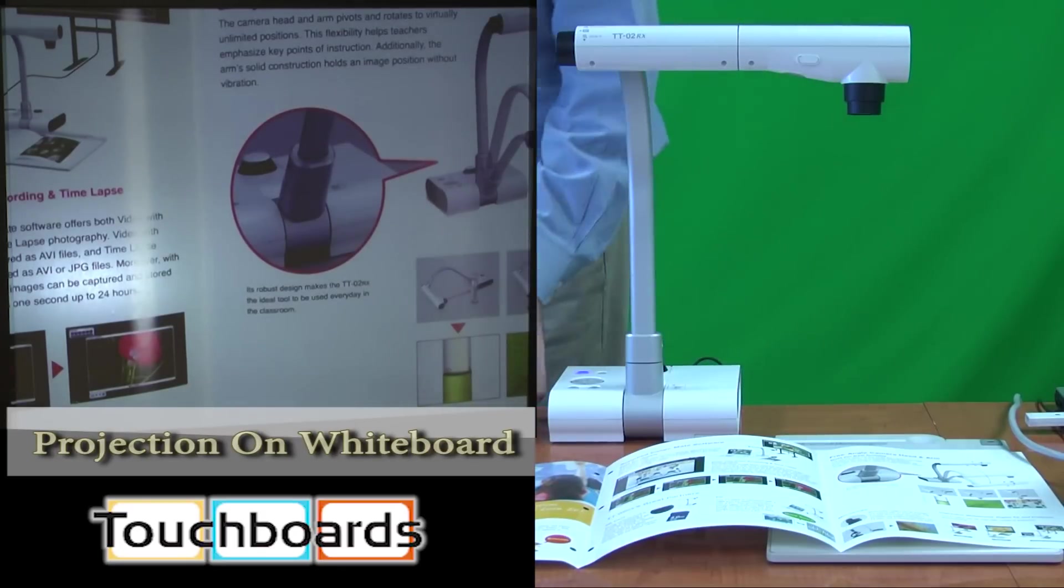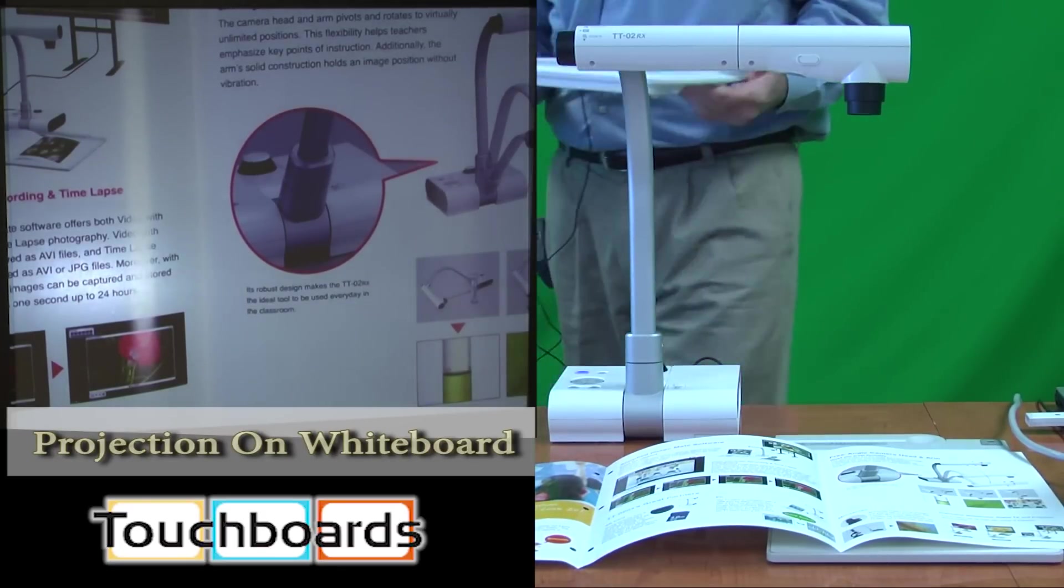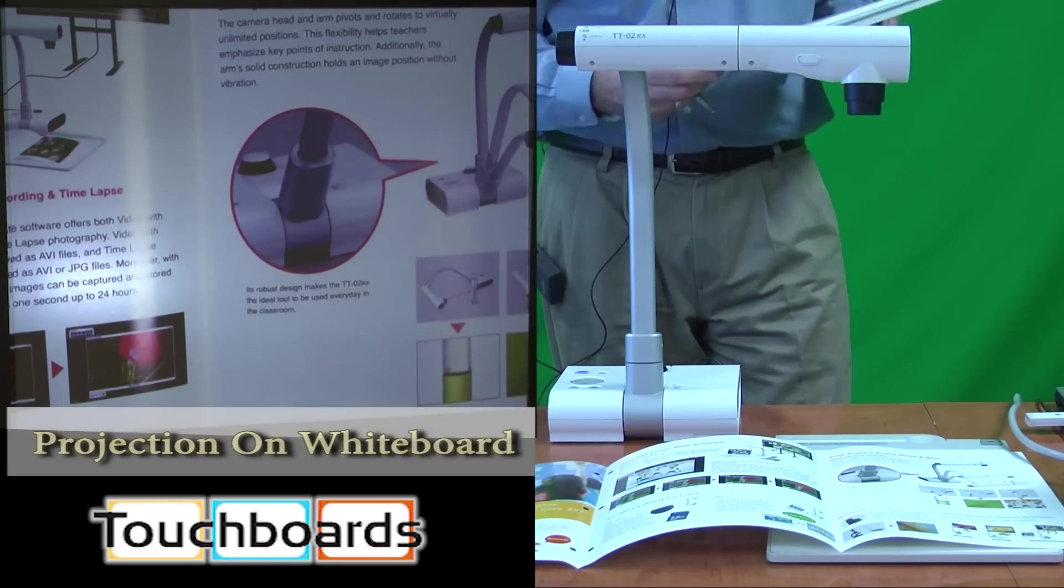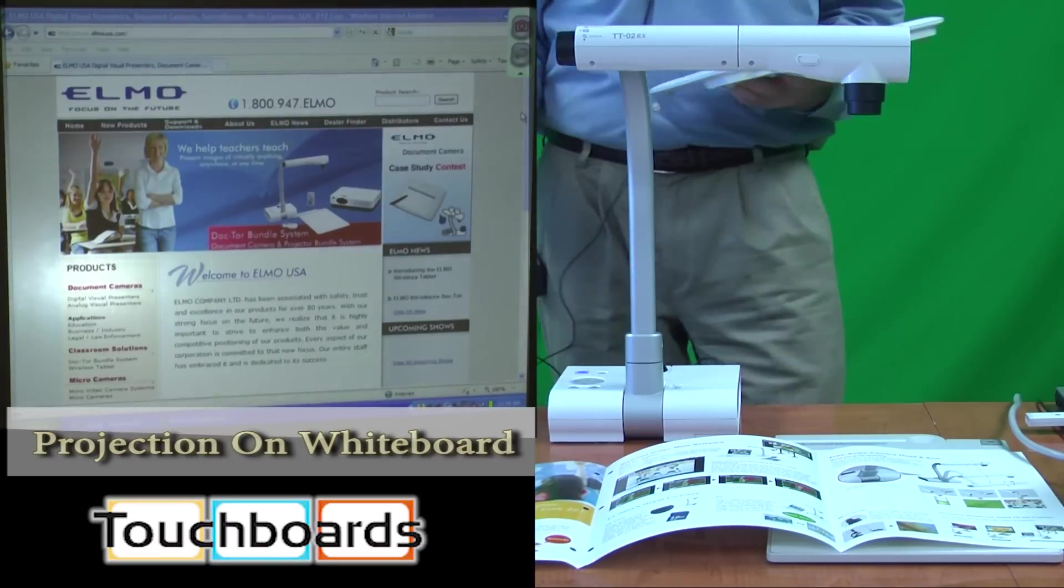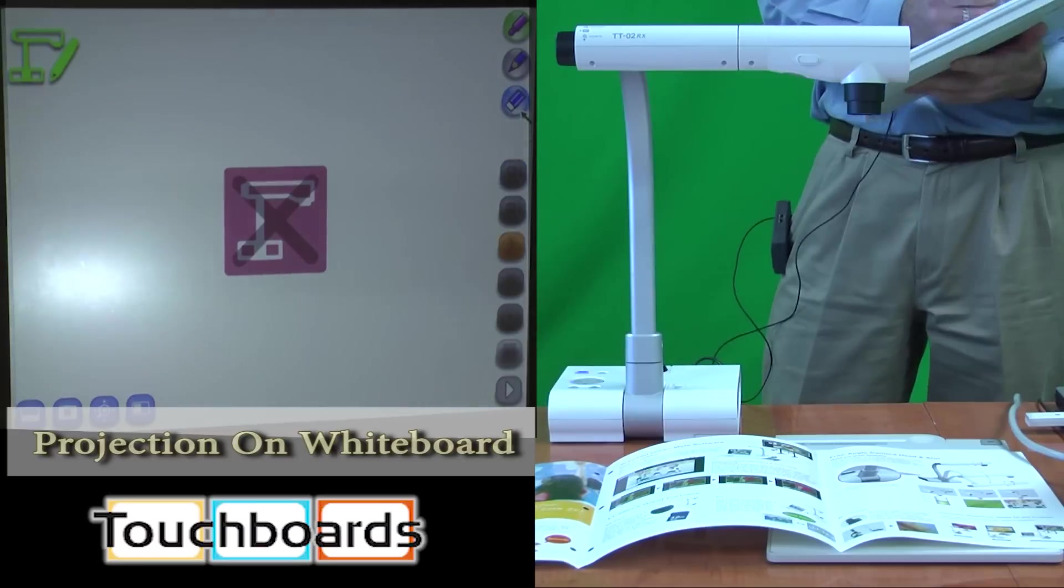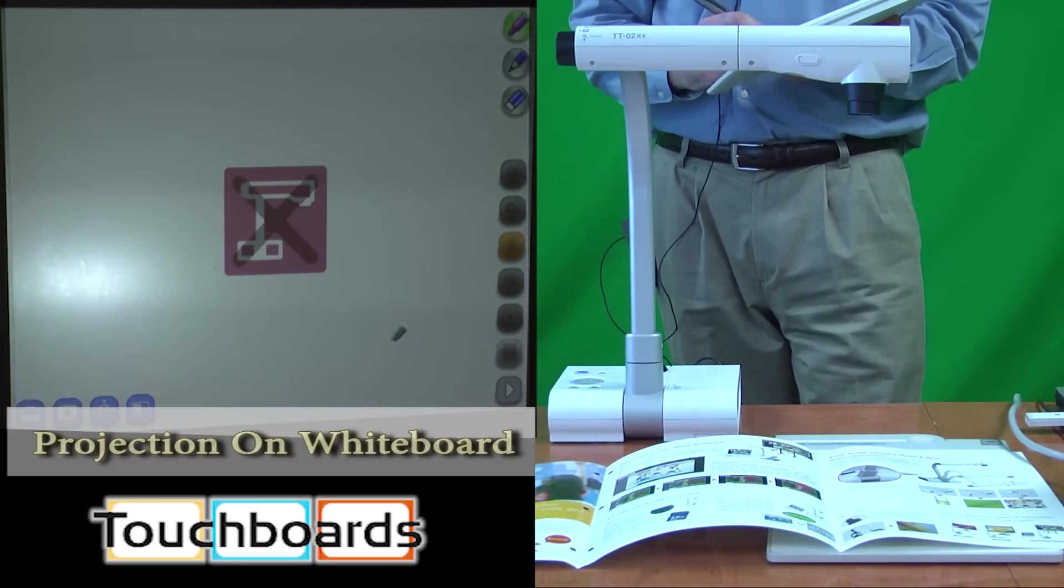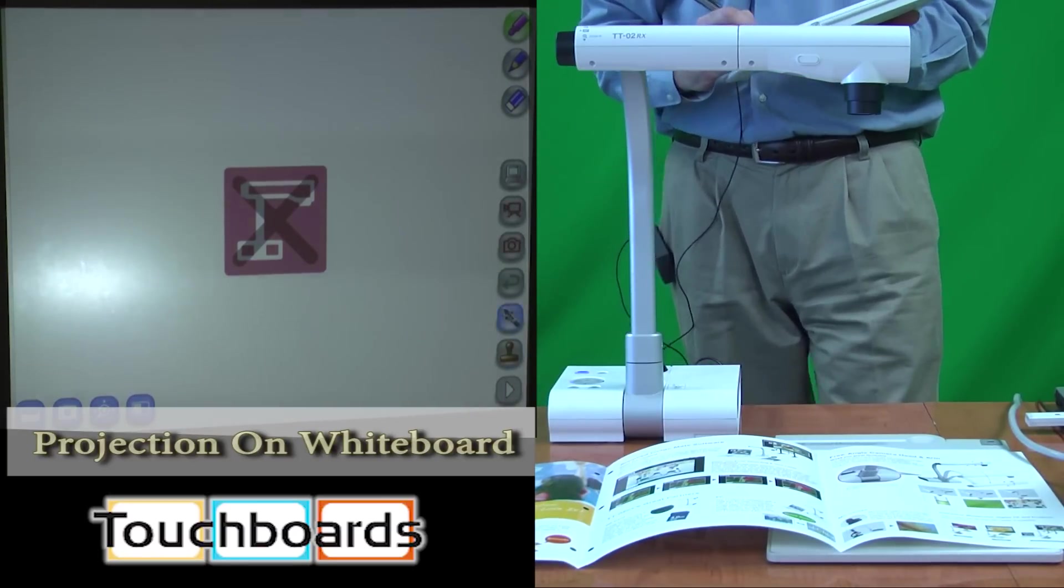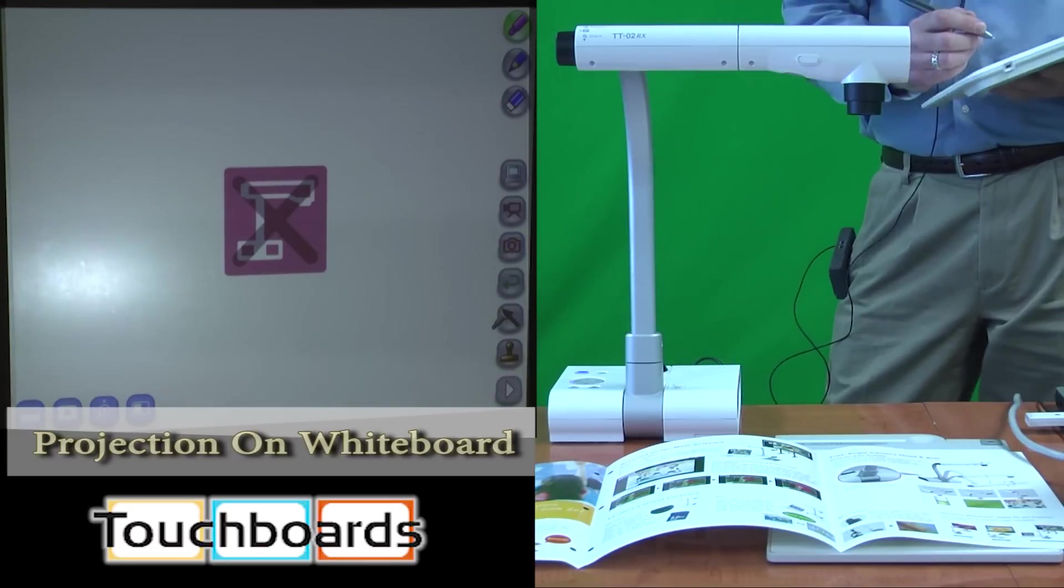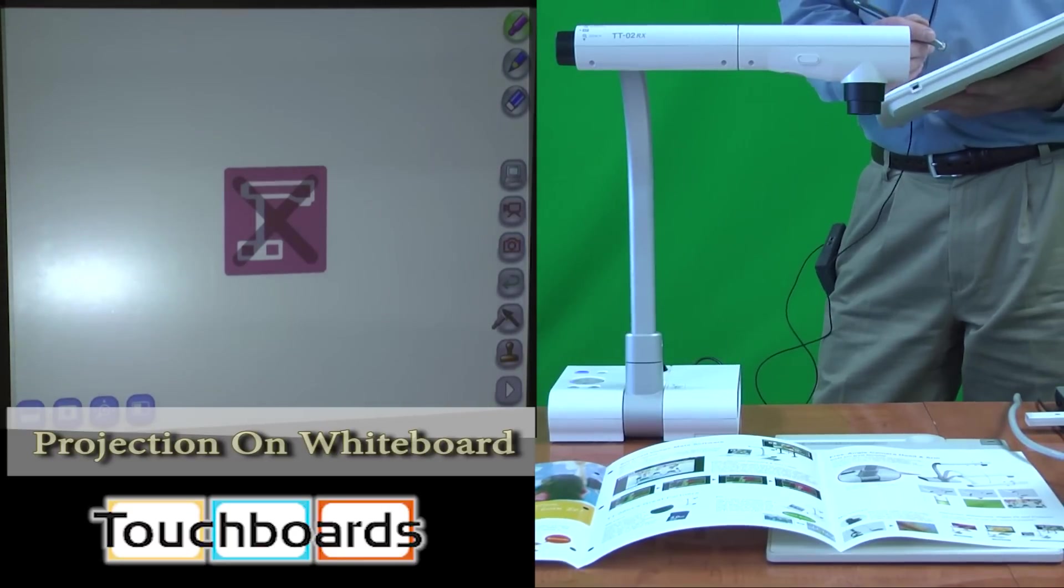We also have introduced recently the ELMO CRA1, which is a wireless tablet. The wireless tablet will allow us to utilize the functionality of an interactive whiteboard, along with the ability to manipulate our information on the document camera.